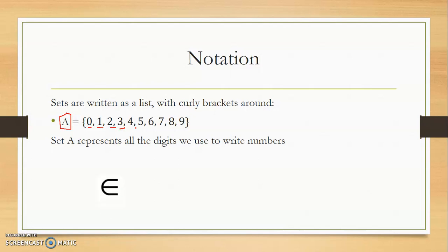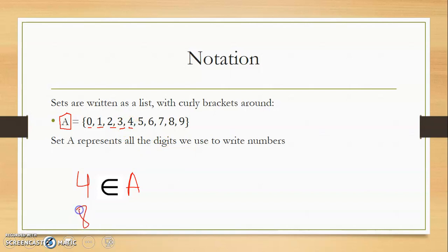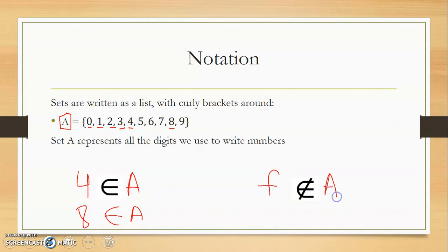Some new notation you want to know is this symbol right here — it means 'an element of.' For example, if I write four, four is an element of A, which is true because I see four within this list. Or I can write: eight is an element of set A because I also see eight within this list. On the other hand, this symbol means 'not an element of.' So for example, F is not an element of A — which is true because I don't see F here. Or: 10 is not an element of set A — I see zero and one, but I don't see 10 within this list.